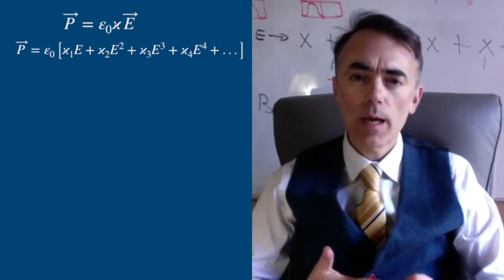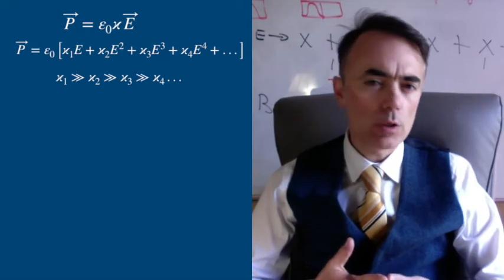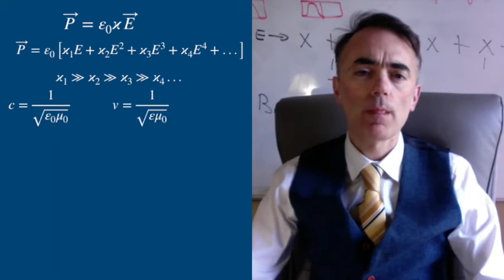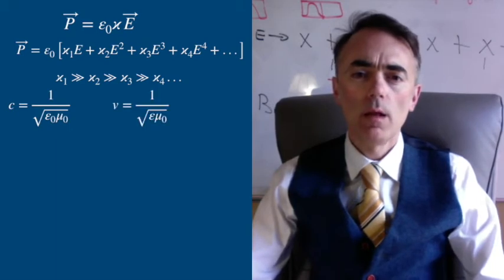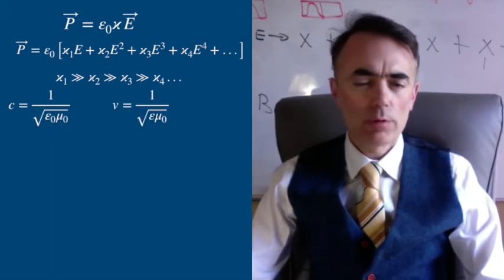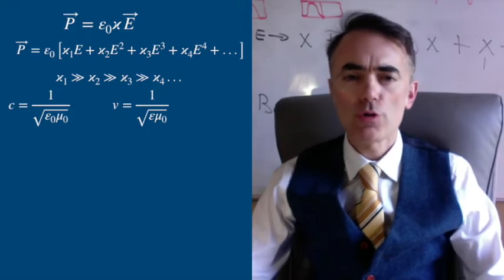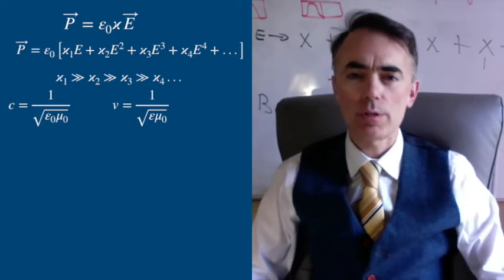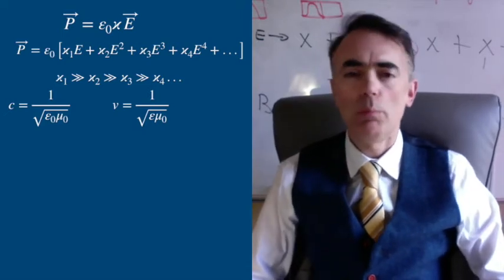Where chi-1 is larger than chi-2, and chi-2 is larger than chi-3, and so on. When the electric field is small, only the first term is important, but when the electric field is larger, then the second term starts to be important.